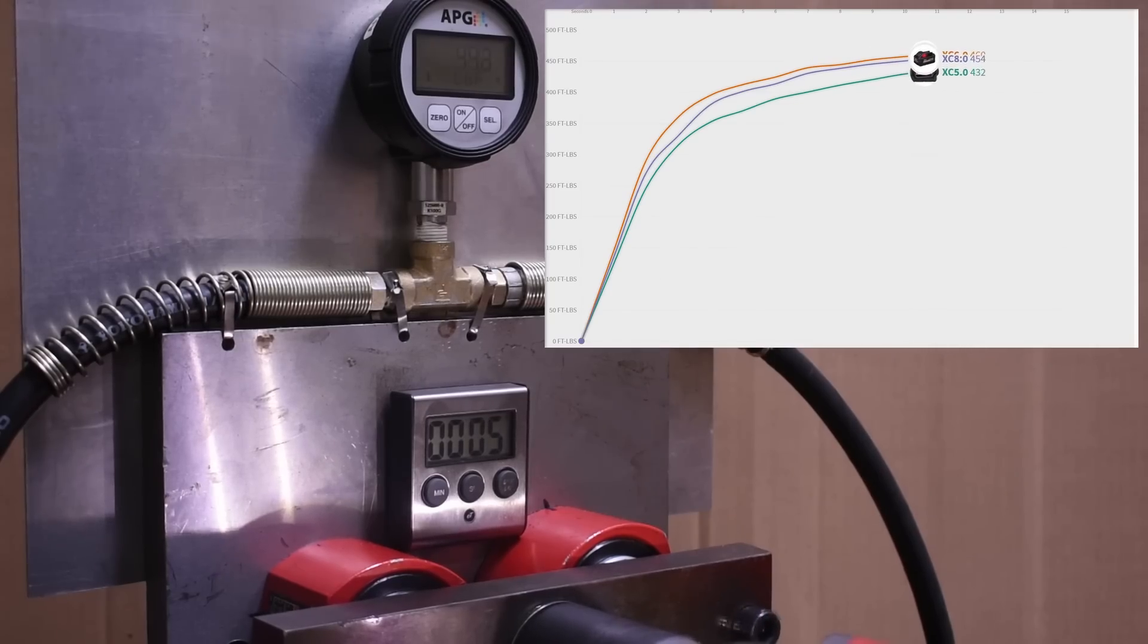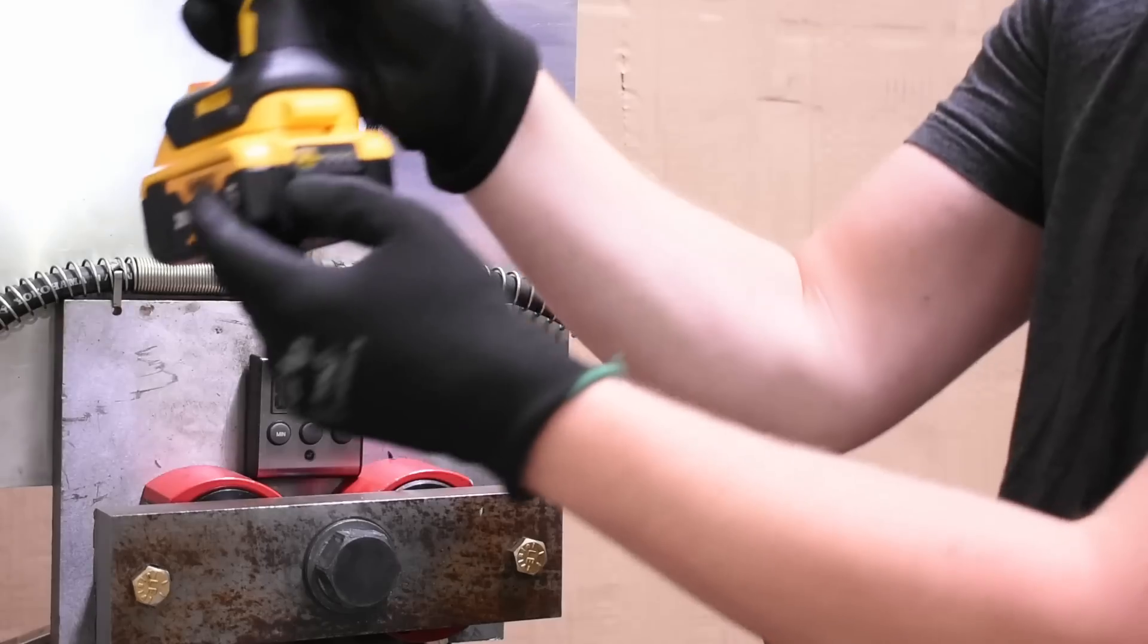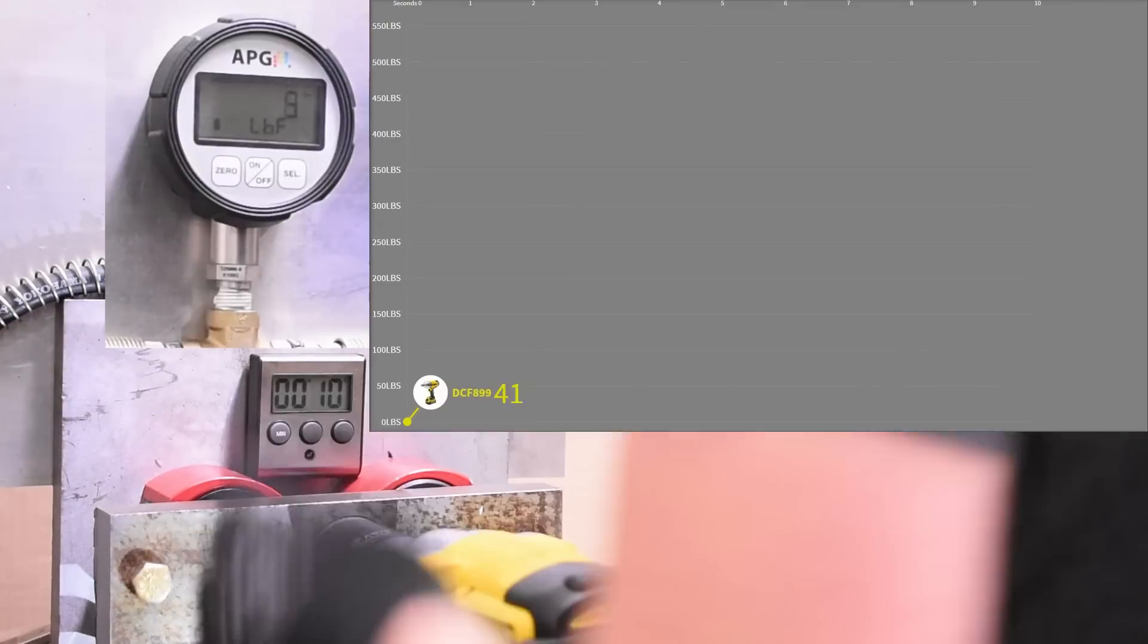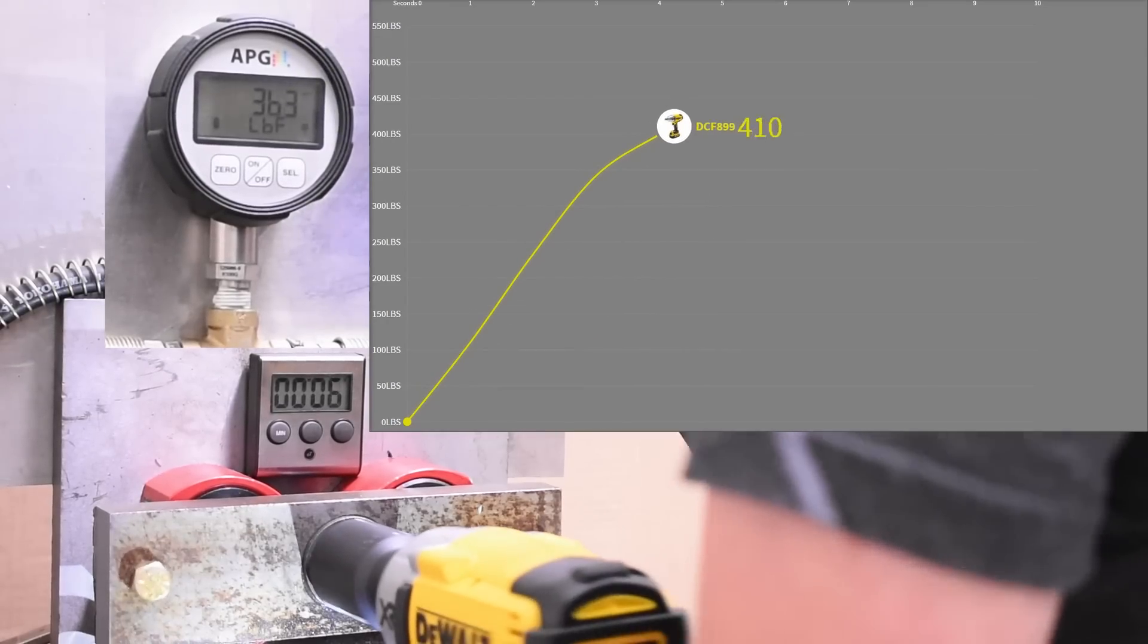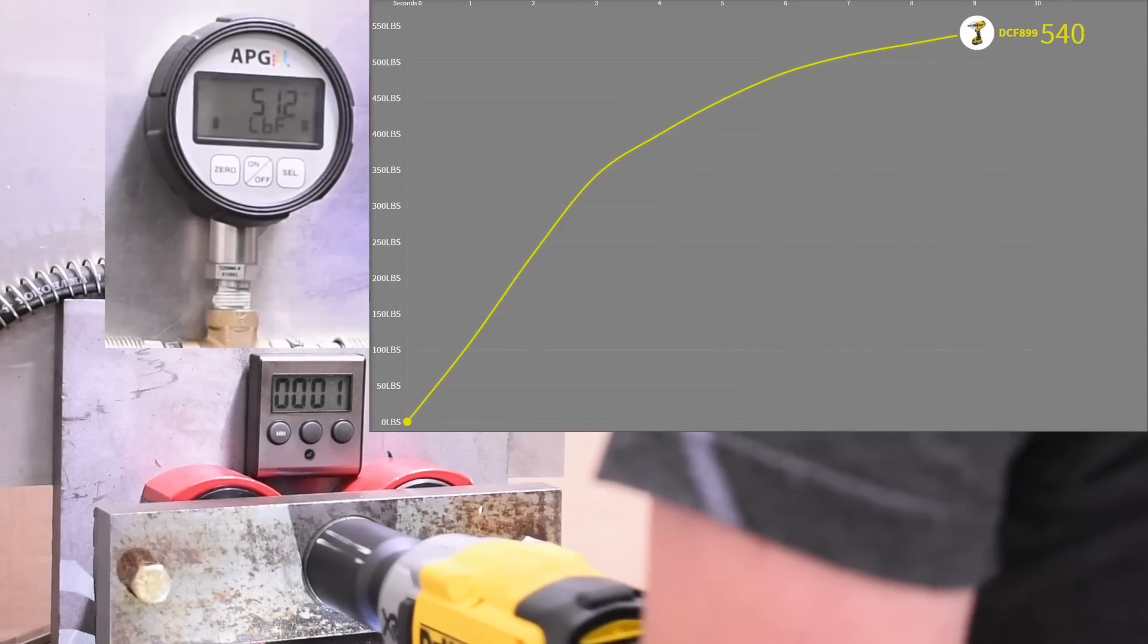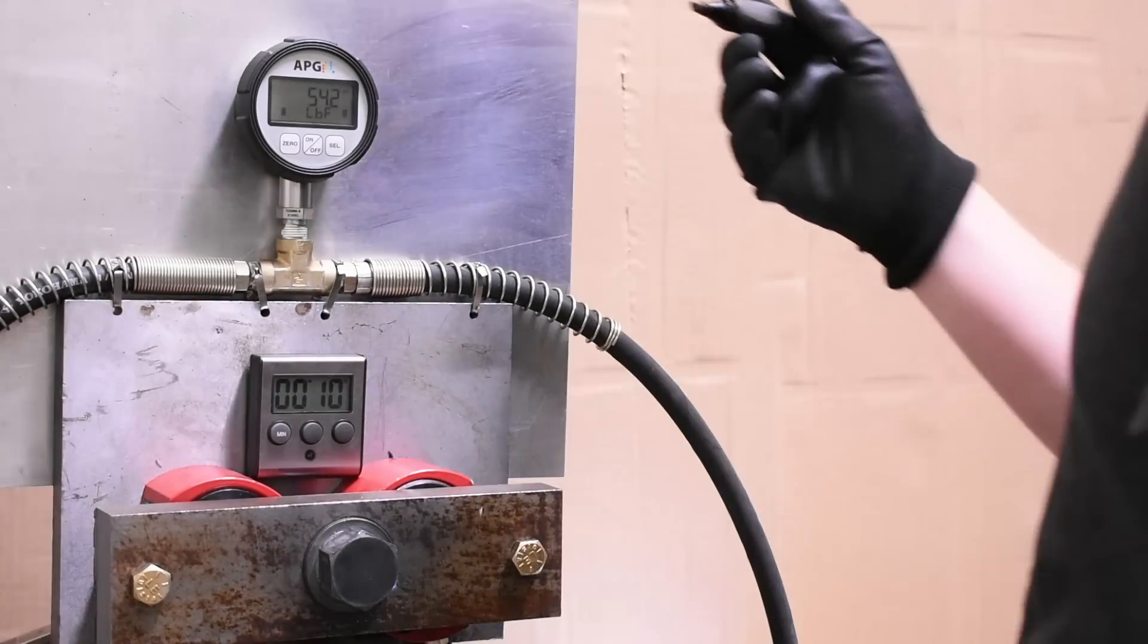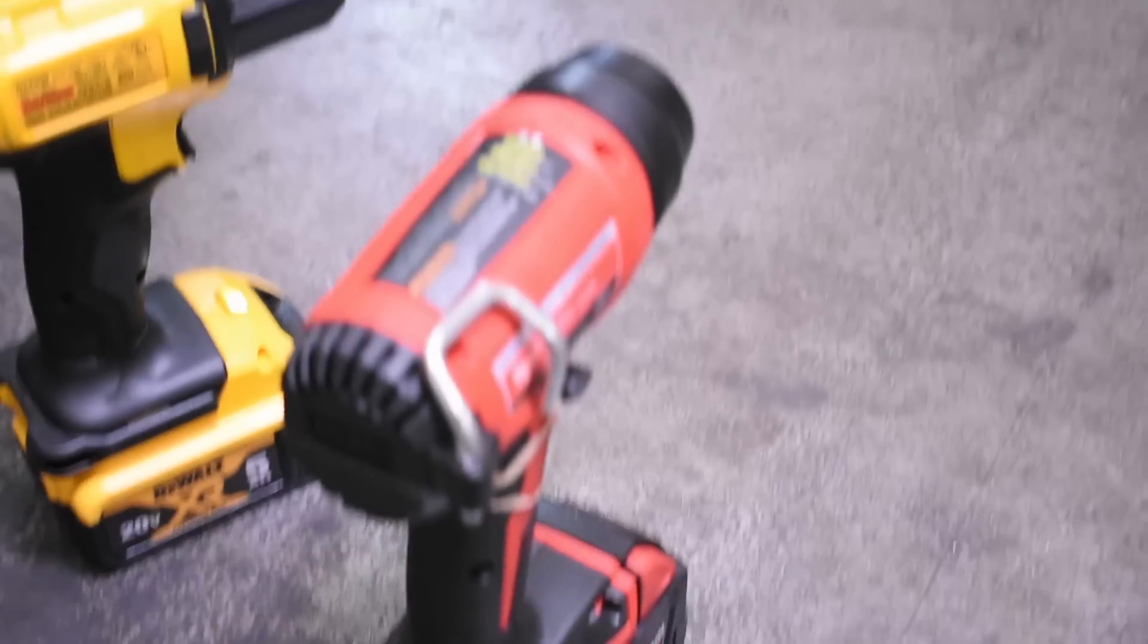The only test we'll be doing today is max torque. 10 seconds in reverse, here's the Dewalt DCF 899 high torque with their 5 amp hour pack doing its baseline run. 548 business as usual for the Dewalt, a clean curve there despite sounding like a box of rocks, which sometimes this tool does.